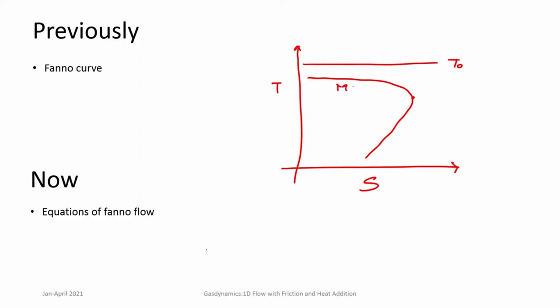Mach number less than 1 is the subsonic branch; Mach number greater than 1 is the supersonic branch. On the supersonic branch, Mach number increases while pressure and temperature decrease. On the subsonic branch, Mach number decreases while pressure and temperature increase. Now that this concept is established, let us go ahead and explore different concepts related to friction.